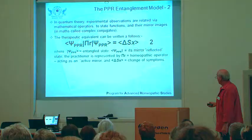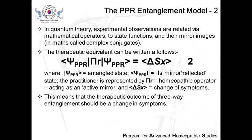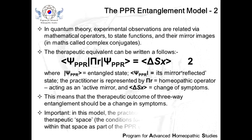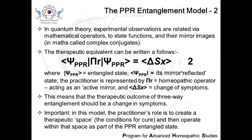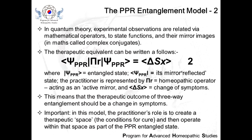The therapeutic outcome of three-way entanglement should be, could be, a change of symptoms. The practitioner's role is to create a space. The space in which quantum theory occurs is called a Hilbert space — a mathematical space. What I'm calling it is a therapeutic state space. The point is, what the practitioner is doing is creating that space and then operating within it.